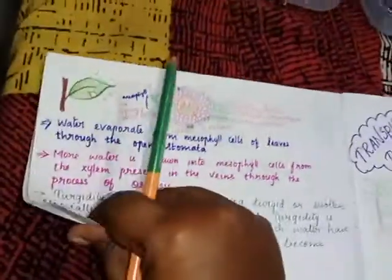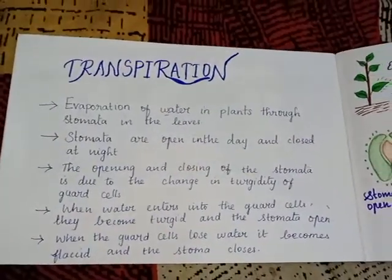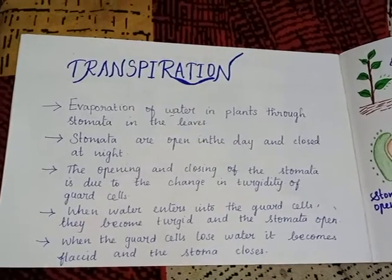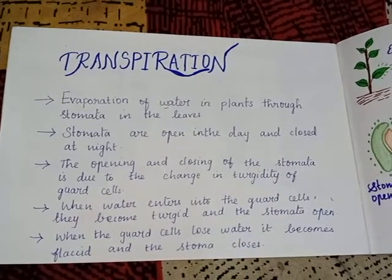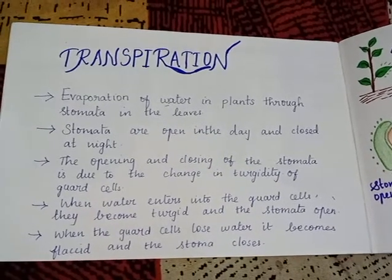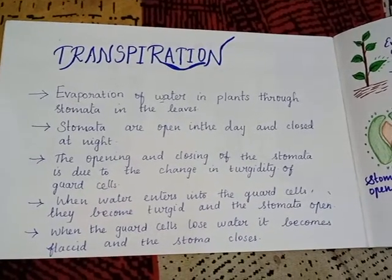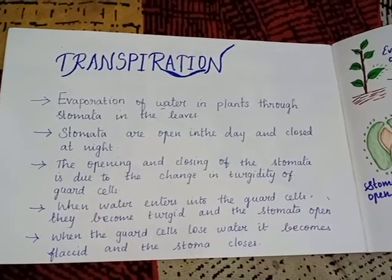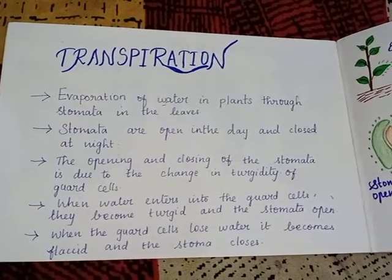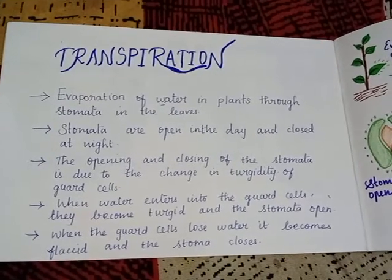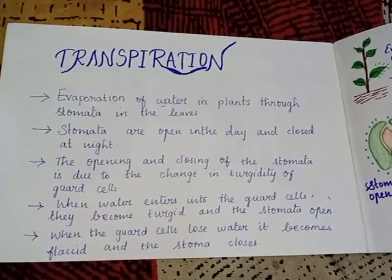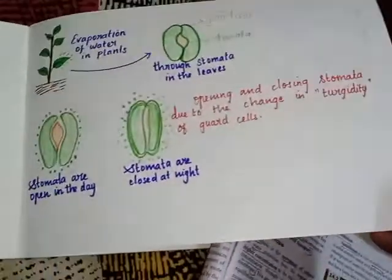Evaporation of water in plants through stomata in the leaves. Stomata are open in the day and closed at night. The opening and closing of stomata is due to the change in turgidity of guard cells. When water enters into the guard cells, they become turgid and the stomata open. When the guard cells lose water, they become flaccid and stomata close.